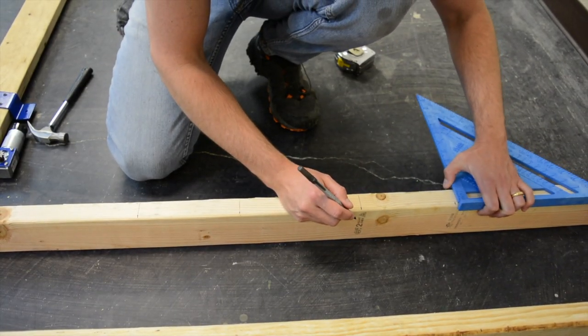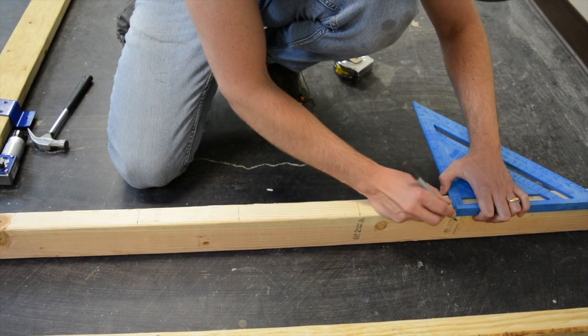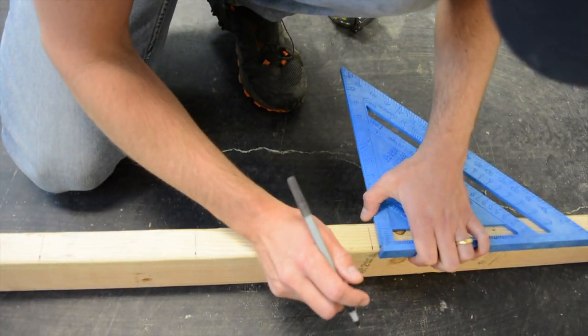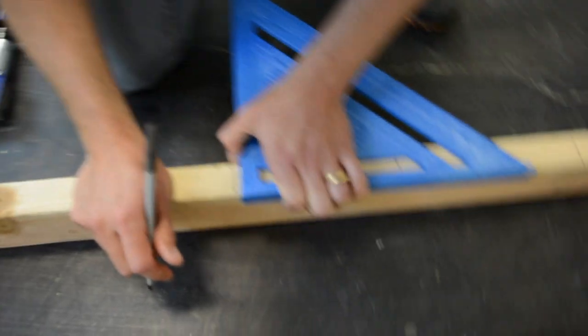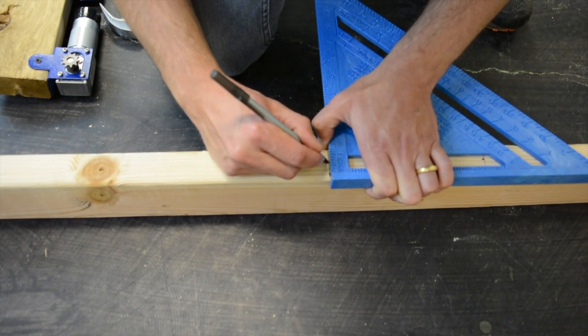For this next part, we need to find the exact center of a vertical frame leg. So measuring from the edge on the short side, we need to measure all the way across, and then divide that by 2 to find the middle, and then draw that center mark on each one of our lines that we made with the speed square.